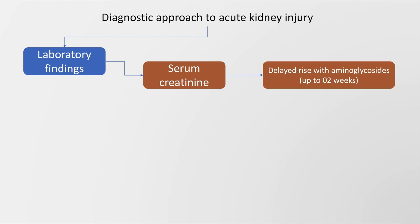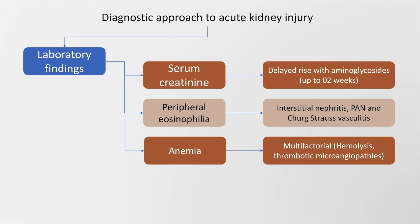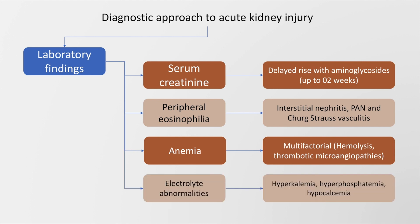Lab abnormalities in acute kidney injury include a raised serum creatinine, which may show a delayed rise with aminoglycoside toxicity. Peripheral eosinophilia can suggest interstitial nephritis, polyarteritis nodosa, or Churg-Strauss vasculitis. Anemia is generally present in AKI and is multifactorial, due to hemolysis and other pathological processes such as thrombotic microangiopathies. Electrolyte abnormalities such as hyperkalemia, hyperphosphatemia, and hypocalcemia may also be present.